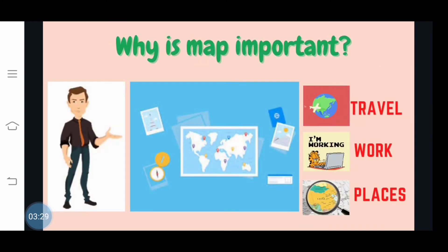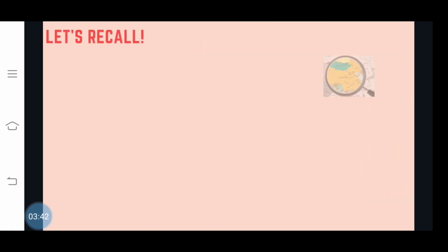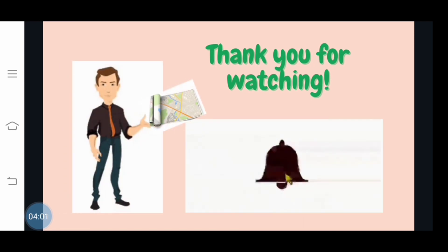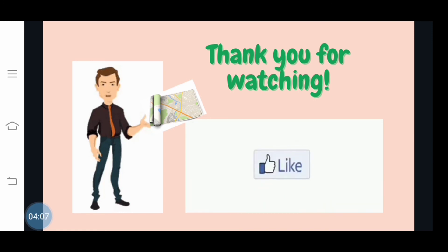Now, why is a map important? A map is important for traveling, work-related purposes, and finding places. Let's recall the important key ideas: a map is a flat picture of the Earth; the Compass Rose shows directions; and Cartographers are the ones who create maps. Now let's explore the world, but don't forget to bring your map. Remember, I'm not only telling stories, but I'm teaching minds with a heart. Thank you for watching!